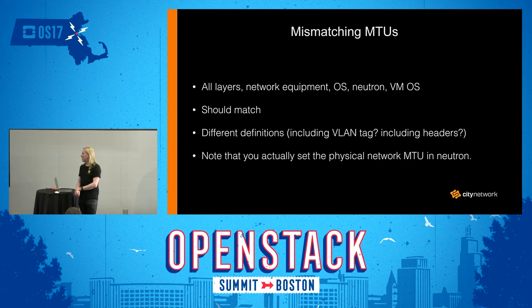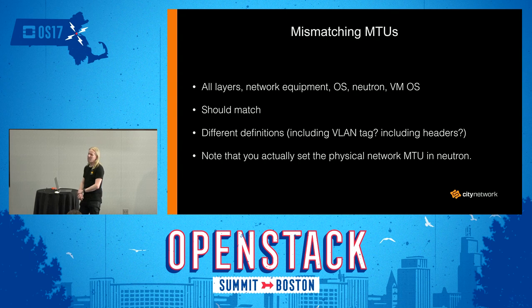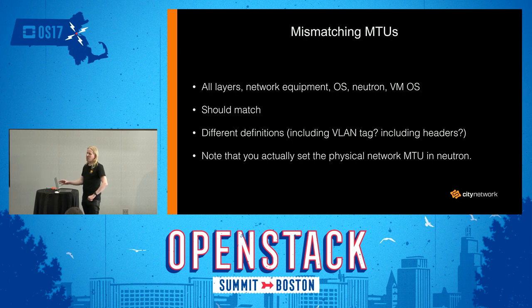Also note that you actually set the physical network MTU in Neutron. For example, if you use VXLAN and set the physical MTU to 1500, the MTU of actual interfaces in namespaces will be 1450, as the headers build up there. So if you want it to be 1500 inside, you have to make sure your physical network can handle larger packets and set it to 1550 in Neutron.